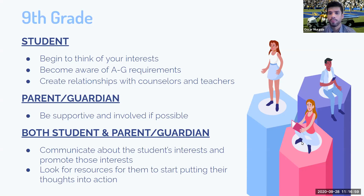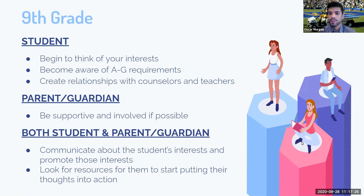For parents in 9th grade, be supportive and involved with your students. Start asking questions about how they're doing in school and what interests they might be developing. For both parents and students, start having small discussions — what class do you really enjoy, what do you like about it? Look for resources and encourage students to get into clubs they're passionate about, start participating after school through ASB or leadership, and find resources that will be a good fit for them down the line.